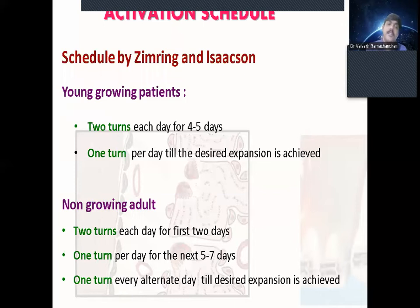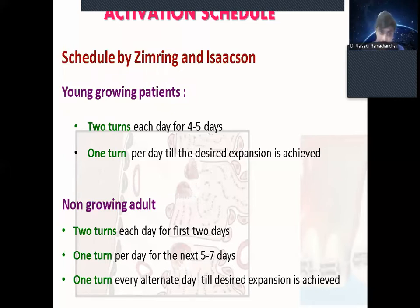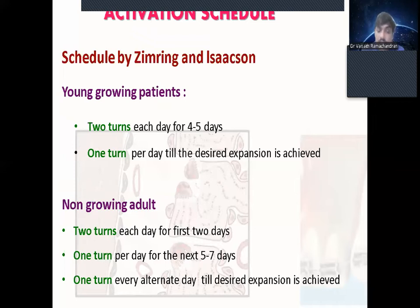In the schedule by Simring and Isaacson: for younger patients aged 2–10, two turns each day for four to five days, then one turn per day for the next five to seven days, then one turn on alternate days until the desired expansion is achieved. These are the two activation schedules — one by TIMSS and the other by Simring and Isaacson.